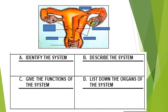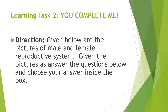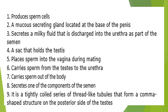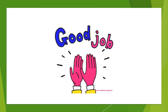Now observe the second image. Identify the system, describe the system, give the functions of the system, and list down the organs of the system. Now that you are done answering Learning Task 1, let us proceed with Learning Task 2: You Complete Me. Given below are the pictures of the male and female reproductive system. Answer the questions below and choose your answer inside the box. Here are the pictures that you need to analyze and the word choices inside the box to answer the questions.